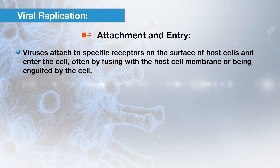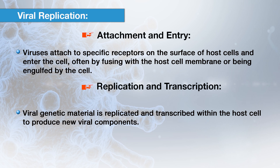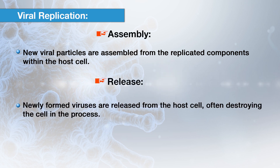Viral replication involves several steps: attachment and entry, where viruses attach to specific receptors on the host cell surface and enter, often by fusing with the host cell membrane or being engulfed; replication and transcription, where viral genetic material is replicated and transcribed within the host cell to produce new virus components; assembly, where new viral particles are assembled from replicated components; and release, where newly formed viruses are released, often destroying the host cell in the process.